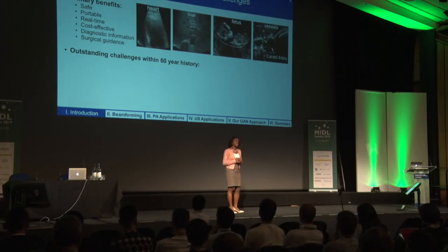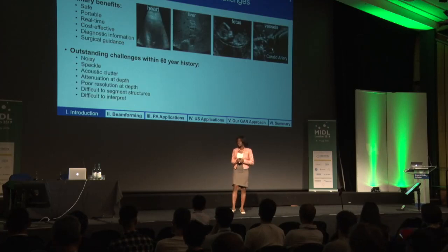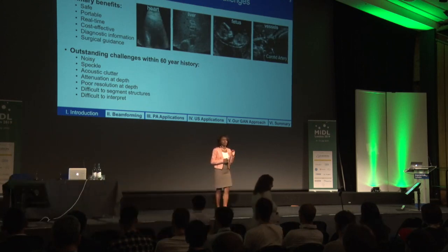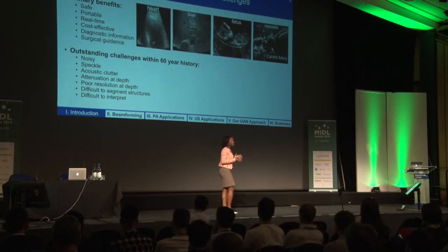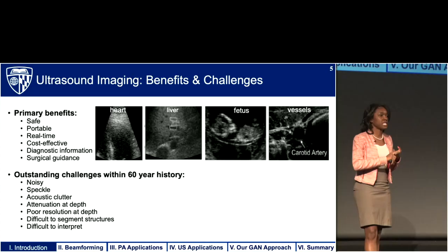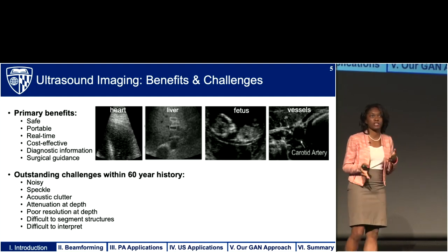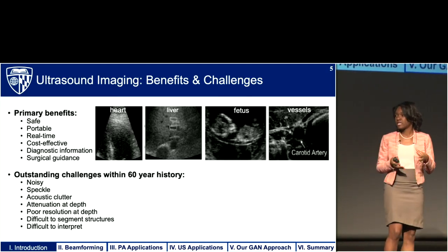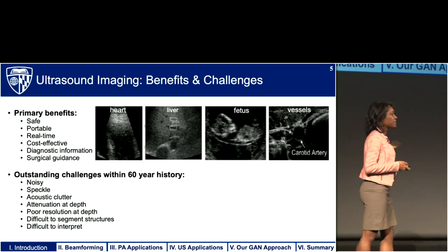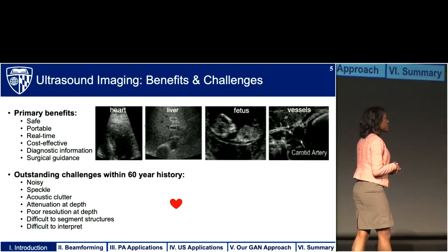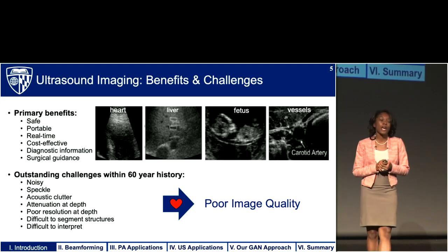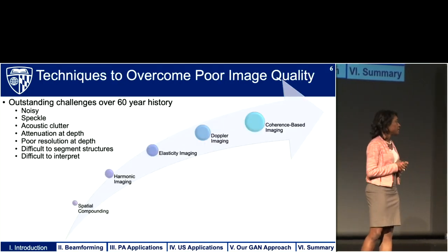Despite these many benefits, several outstanding challenges have persisted in the 60-year history of ultrasound. Ultrasound images are known to be very noisy, they contain a granular texture known as speckle, they contain acoustic clutter which causes signals to appear in regions where there should be none, and they suffer from poor sound attenuation at depth as well as poor resolution as depth increases. All of these challenges combine to make ultrasound images difficult to segment and interpret, and generally considered to have poor quality compared to other imaging methods.